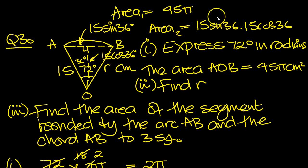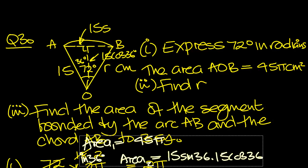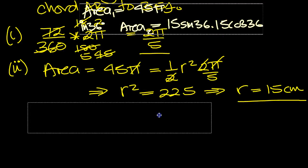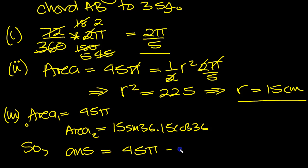So the difference then will be the difference between these two things here. So what I'm going to do now is just copy these two things that we've just written down. And I'm just going to move them down now, and we'll tidy it up. So here's the two areas for part 3 then. So the answer will be the difference between the two. The bigger area, the 45 pi, take away the 15 squared, times sine 36, times cosine 36 degrees.